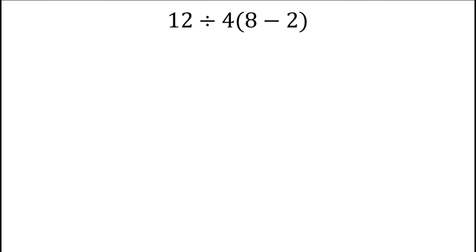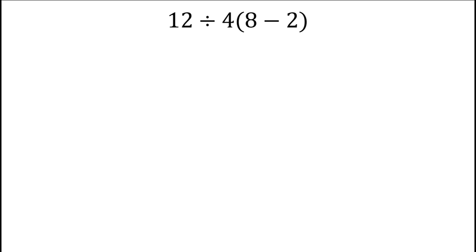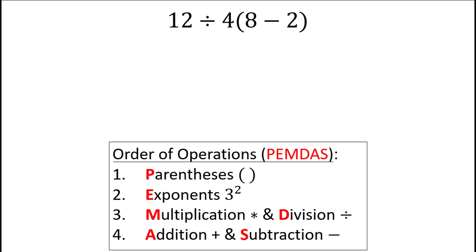Let's look at a few more involved examples. Here we have 12 divided by 4 multiplied by 8 minus 2. Let's use order of operations to simplify this one. First we look for parentheses, which we do have in this problem. 8 minus 2 simplifies to 6.